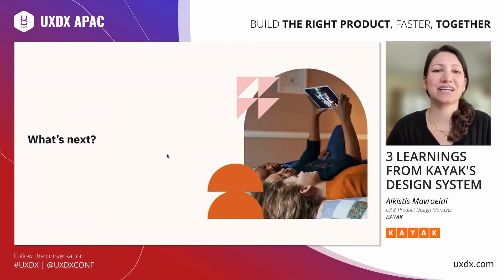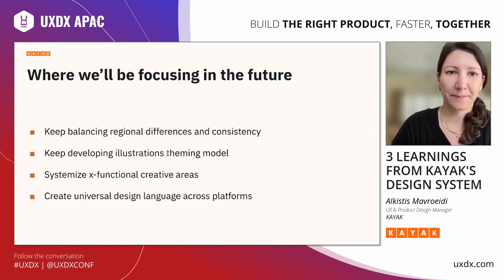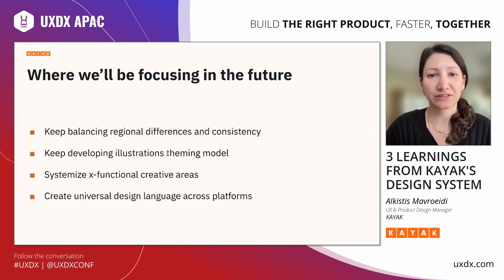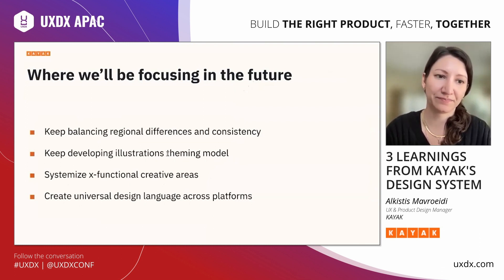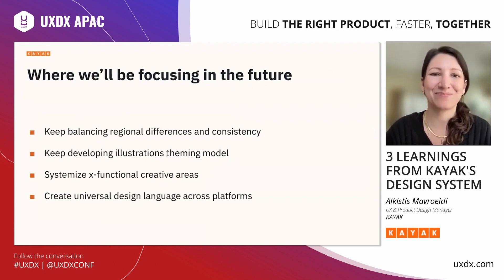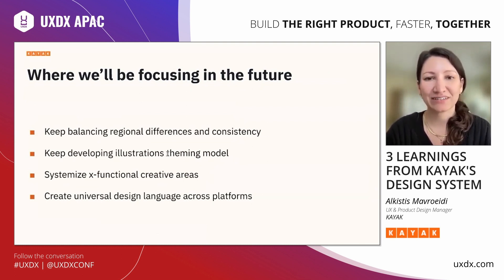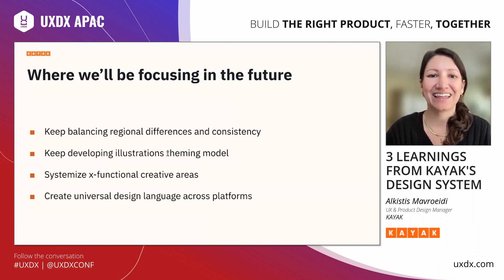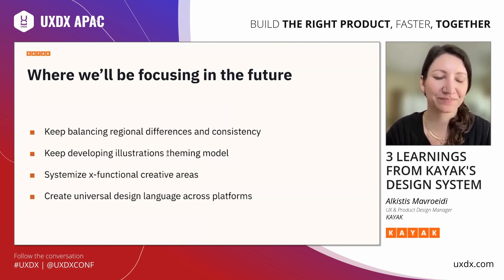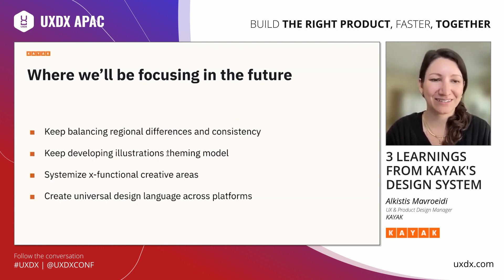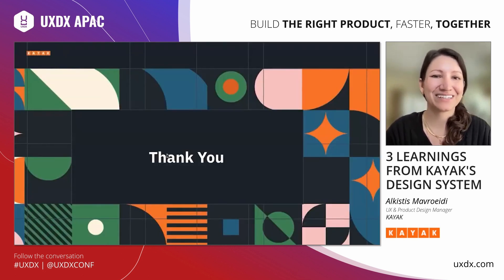To wrap this up, here's a view of what's coming up next for our design systems efforts. We'll keep pushing our design system to support regional differences while keeping the consistency of our user experience. The illustration theming model is in its early stages but is showing huge potential and scalability. We're also exploring other creative areas to systemize, such as marketing, advertising, and TV, which will help us create a universal design language that will strengthen our brand identity on multiple media platforms. These are a lot of challenges, but we're really excited about what's coming, and we hope to share more progress in the future. Thank you for listening, and I really hope these learnings will help you build a scalable and efficient design system for your product as well.